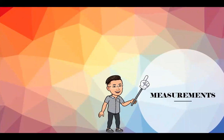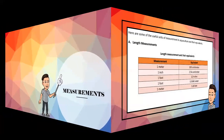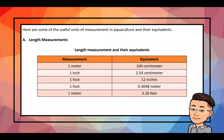Next subtopic is measurements. Here are useful units of measurement in aquaculture and their equivalents. For length: 1 meter = 100 centimeters; 1 inch = 2.54 centimeters; 1 foot = 12 inches; 1 foot = 0.3048 meters; and 1 meter = 3.28 feet.